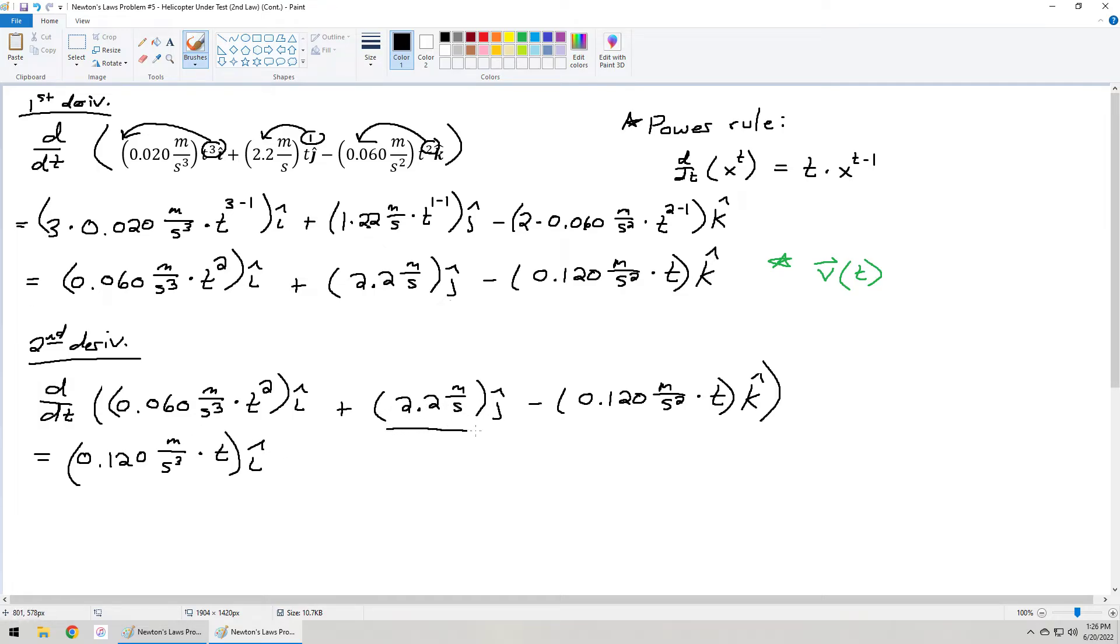Notice that there's no t in the j-chunk, the j-hat chunk, pardon me. Since there's no t, that's like taking the derivative of a constant value. And the rule for taking the derivative of a constant value is just, it's 0. So I'm just going to say 0, we don't care about that. You can choose to write 0 j-hat, if you like. You may want to do that if your instructor or your grader wants you to.